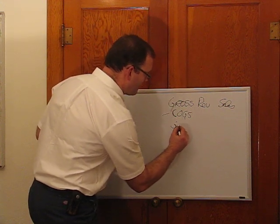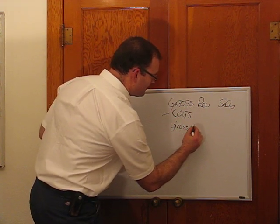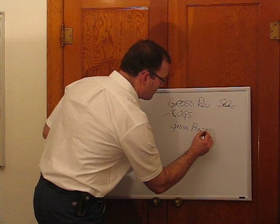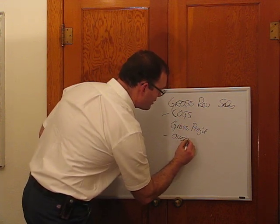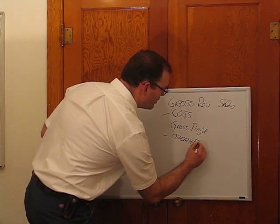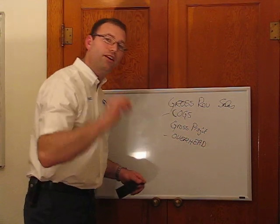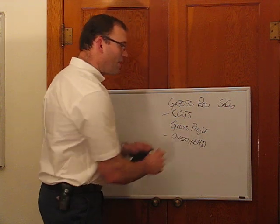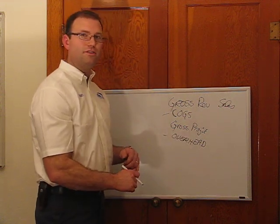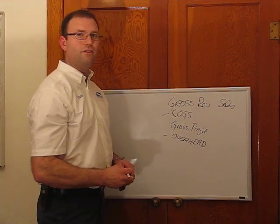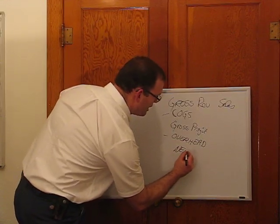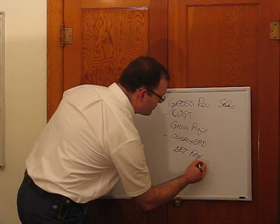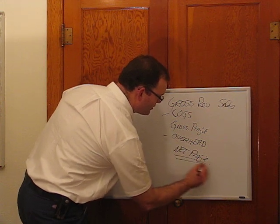If you subtract that, you have your gross profit. Then you subtract your overhead—these are costs that are the same whether you do $1 in sales or $100 million. You're going to have a secretary answering the phone whether your trucks are driving all over town or parked in the shop. Subtract that, and you have your net profit. This is what we're all actually working for.